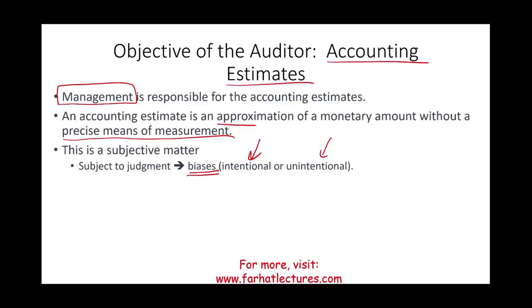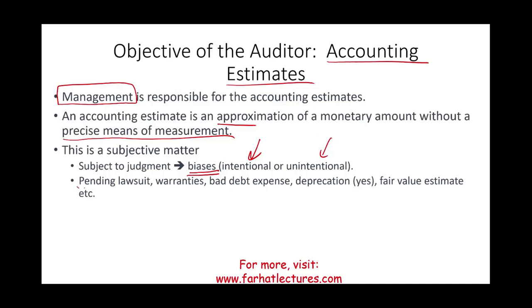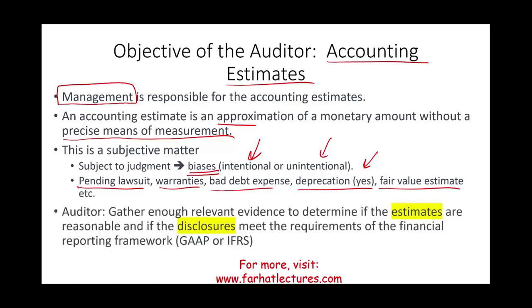Let's look at some sample estimates: pending lawsuits, warranties, bad debt expense, depreciation — yes, depreciation is a form of estimate — fair value estimates, and many others. This is management's part. The auditor is responsible for gathering enough relevant evidence to determine if the estimates are reasonable, including whether the amounts and disclosures meet the requirements of the applicable financial reporting framework, whether US GAAP or IFRS. The auditor's objective is essentially to evaluate what management did.